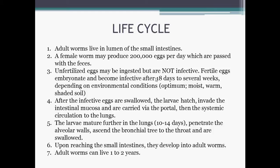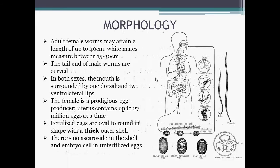After the infective eggs are swallowed, the larvae hatch, invade the intestinal mucosa, and are carried via the portal then the systemic circulation to the lungs. The larvae mature further in the lungs, which takes 10 to 14 days, penetrate the alveolar walls, ascend the bronchial tree to the throat, and are swallowed.